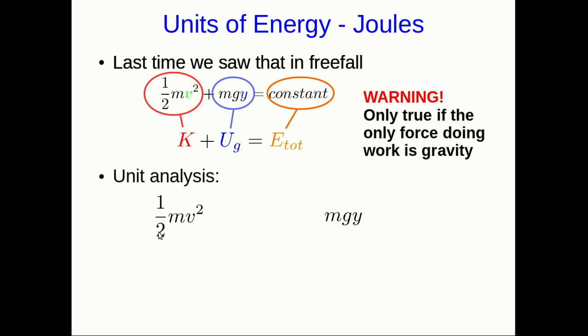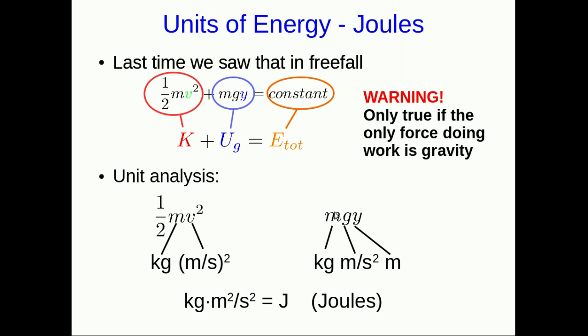Let's carry out a unit analysis quickly. The kinetic energy: mass is in kilograms, speed is in meters per second, so we get kilograms times meters per second all squared. For gravitational potential energy, mass is in kilograms, g is in meters per second squared, y is in meters. Either way you come up with kilogram meters squared per second squared, and we define that as the joule, which is our unit of energy.